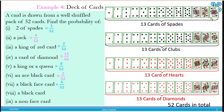Then a black card, 26 of them, 26 over 52.